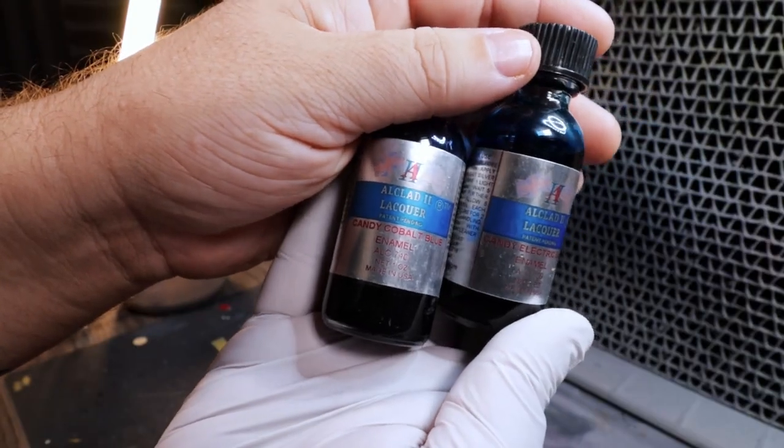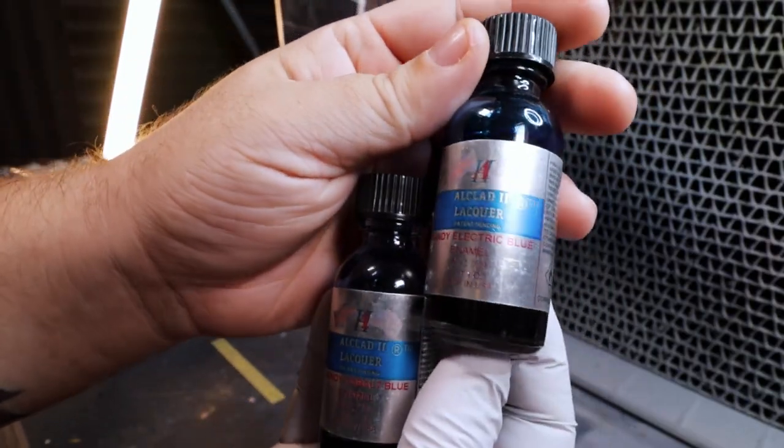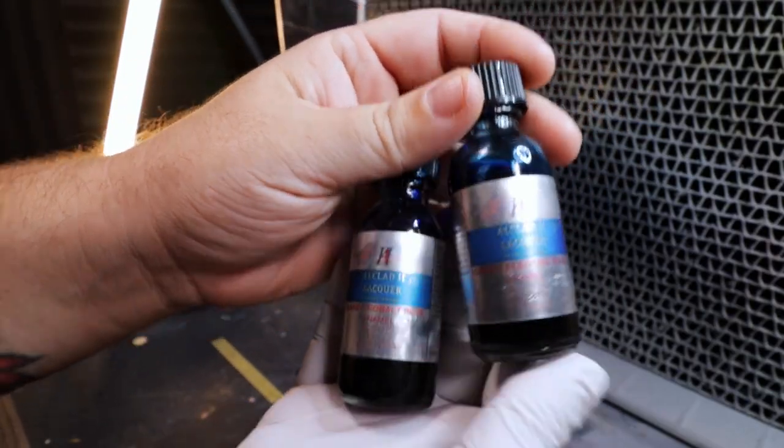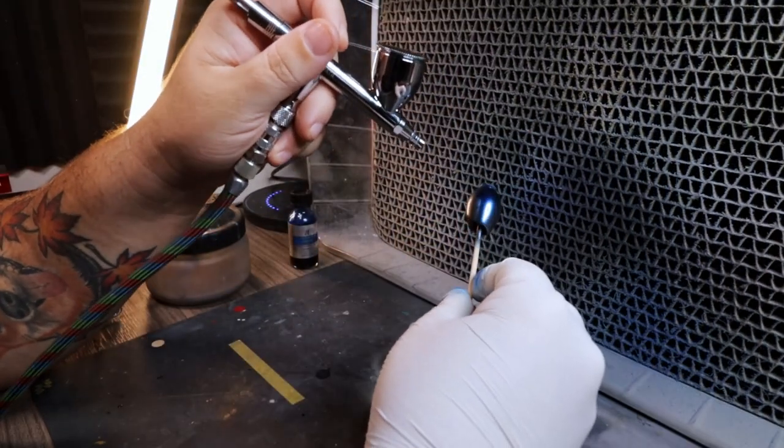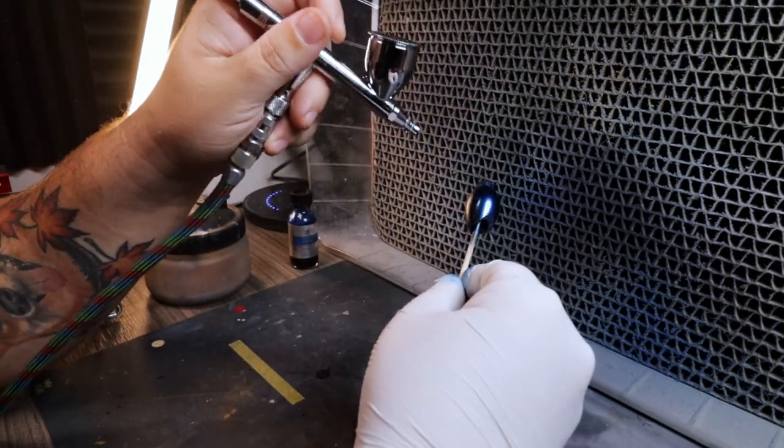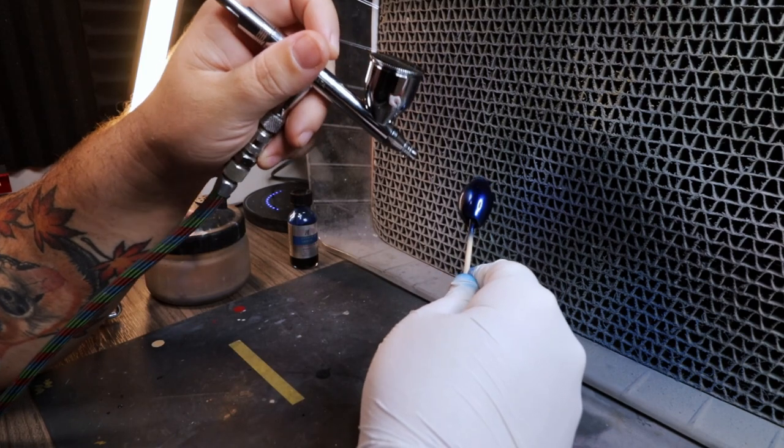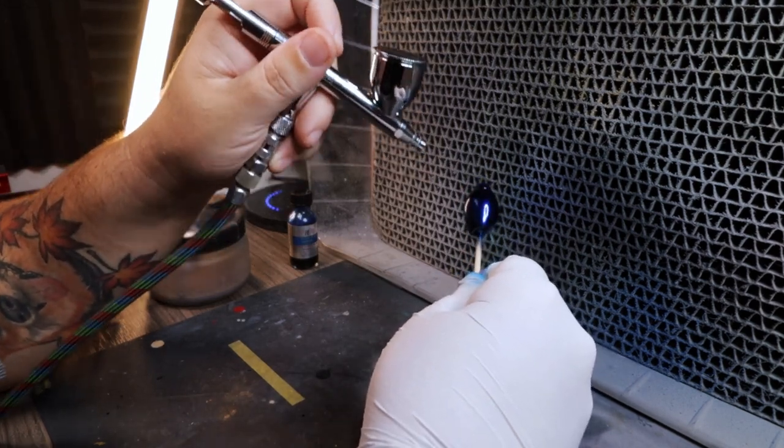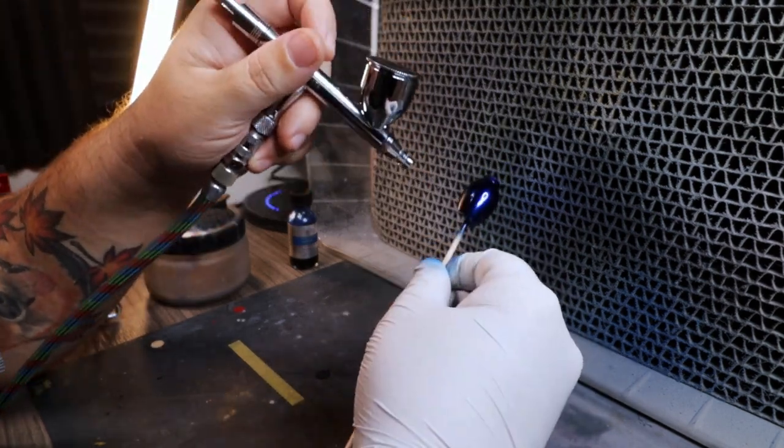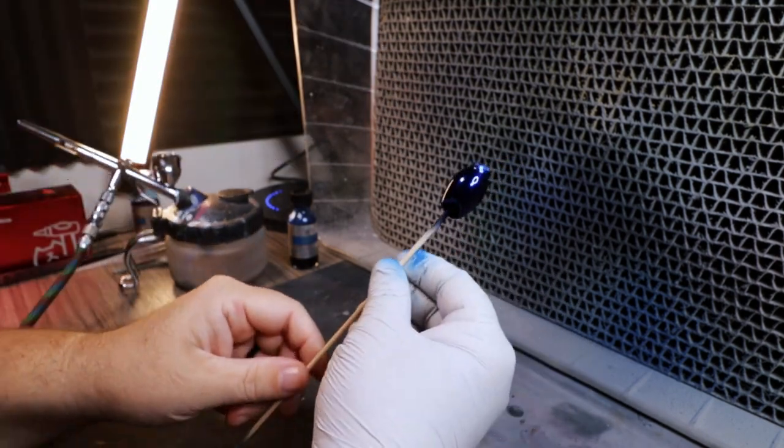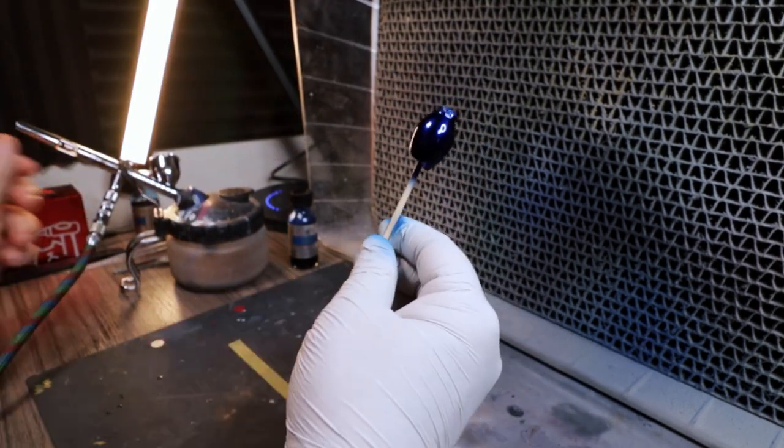Now that the 2K clear is all dry, let's go ahead and add our candy coats. For today, I went ahead and used Alclad Enamel Candies because these are just the ones that I had sitting around. For the darker blues, I went ahead and added a dark cobalt to get a darker color. And for the lighter colors, I went with the Alclad Candy Electric Blue to get a little bit of color separation out of the kit.